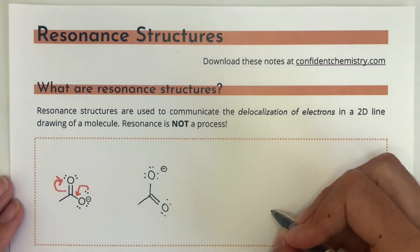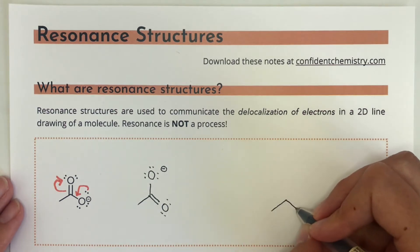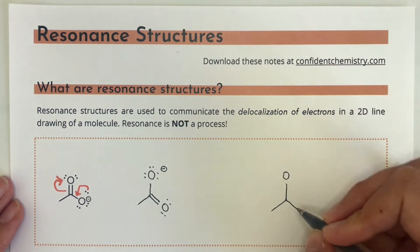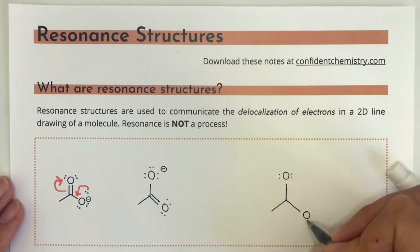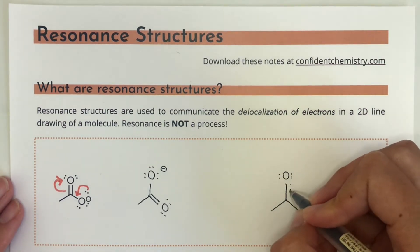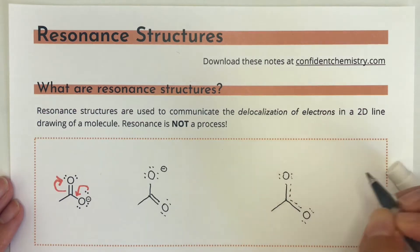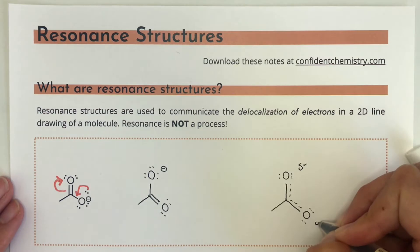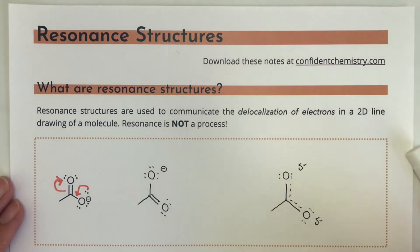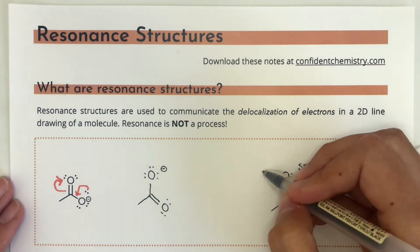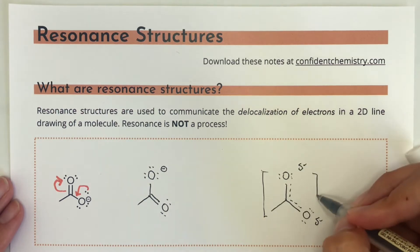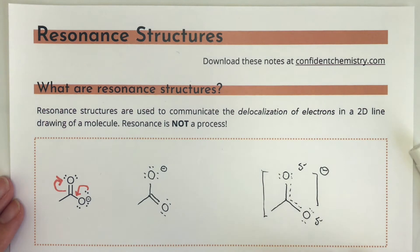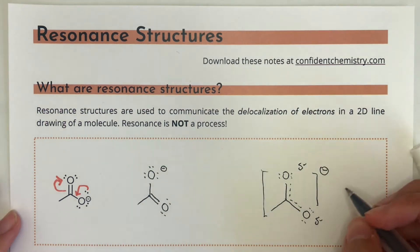That extra negative charge in this molecule isn't stuck or localized on one of the oxygens. In reality, this molecule looks a little bit more like a hybrid of the first two drawings. The bonds between the central carbon and the oxygens are both about 1.5, somewhere in between a single and a double bond. We draw a delta minus on those oxygens to symbolize that there's a little bit of negative charge on each of them, but really the negative charge is distributed across the whole molecule.